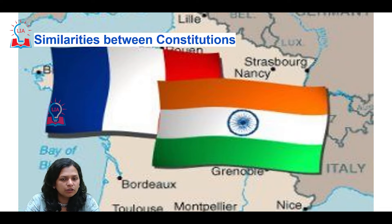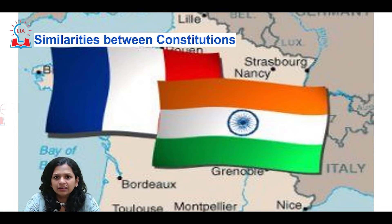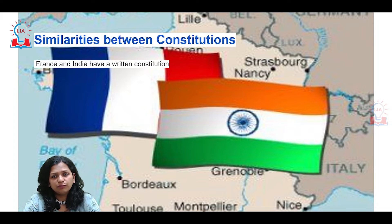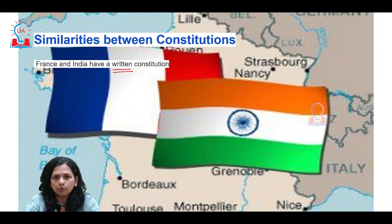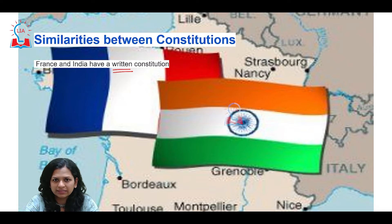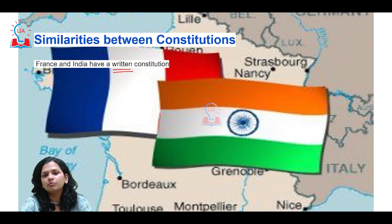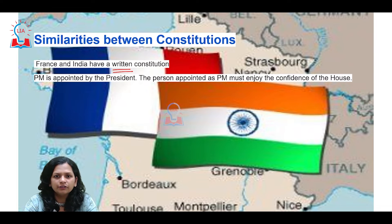This brings us to the similarities between the Indian and French constitutions. The first similarity is that both countries have a written constitution. For India, a written constitution was particularly necessary because of the turbulent independence period, the disturbing partition, and the reorganization of states along linguistic lines. France also has a similar written constitution.